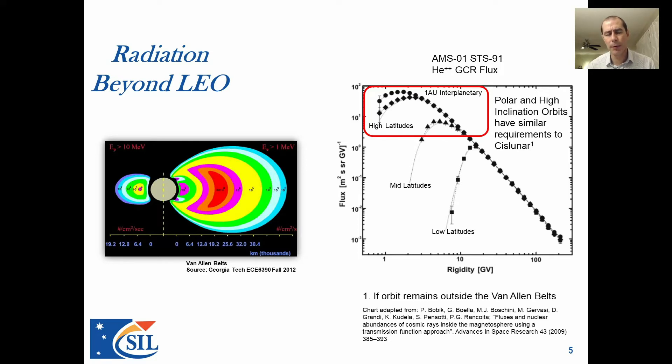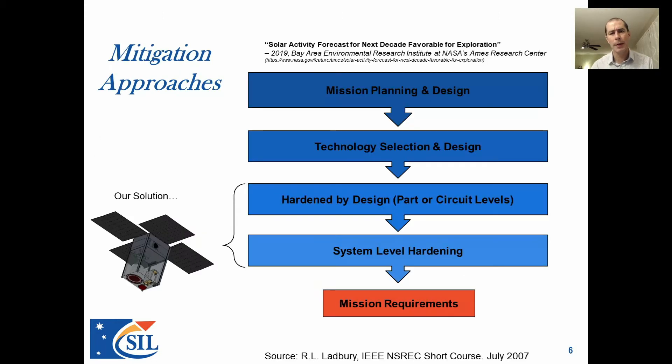But today, we're here to talk really about cislunar applications. There's a lot of work for us to do in the SmallSat community in cislunar space, basically from LEO up until you get back down to the lunar surface. But as we start to enter into those environments, there's some different things that we need to consider, not the least of which is the radiation environment and how that affects our battery management systems and other hardware.